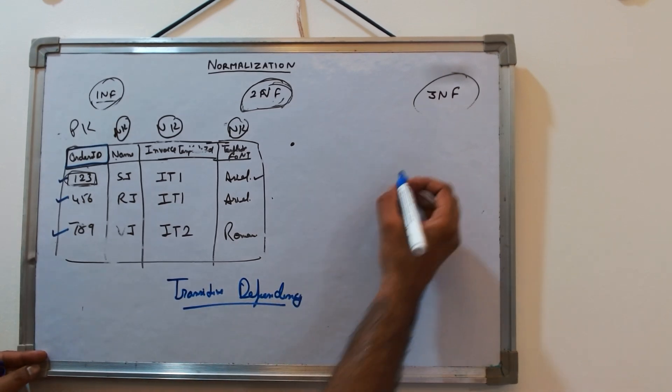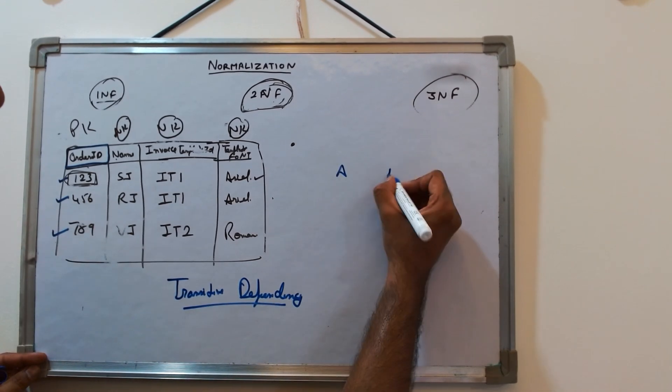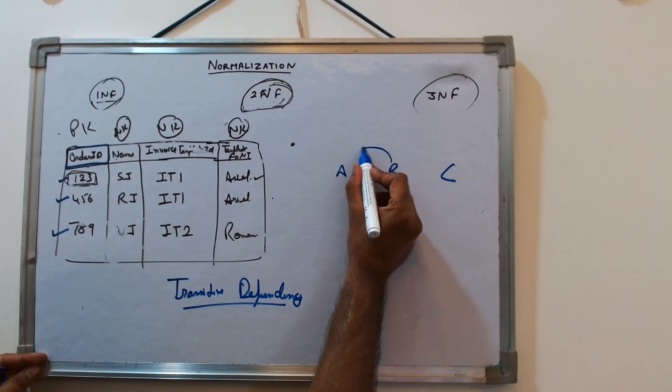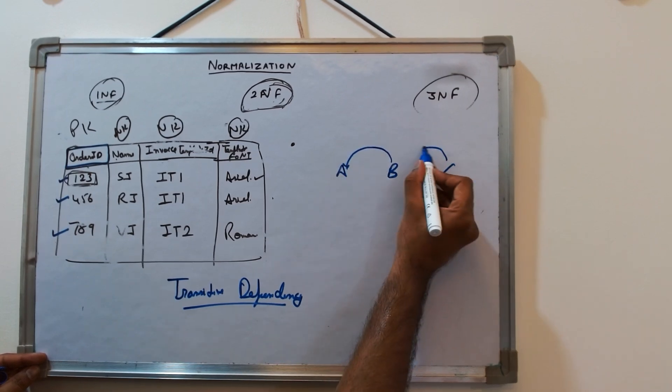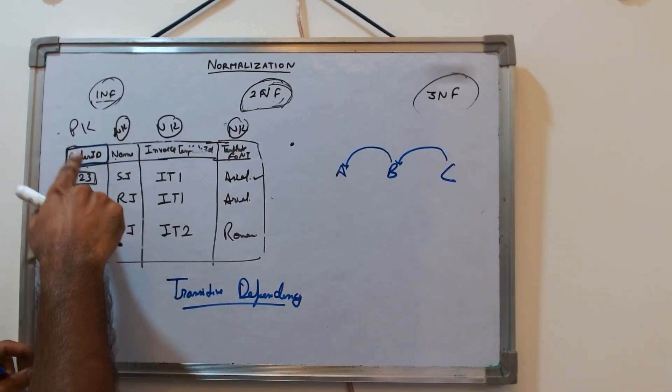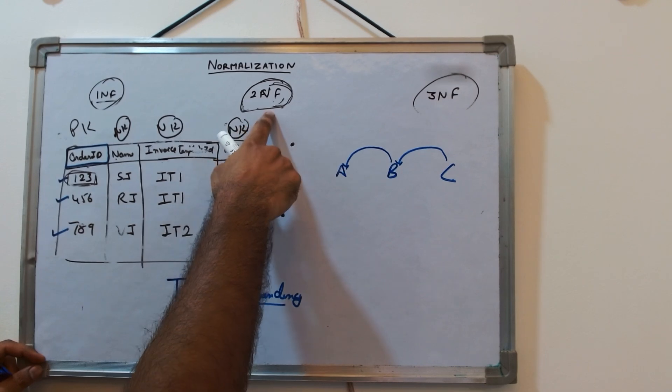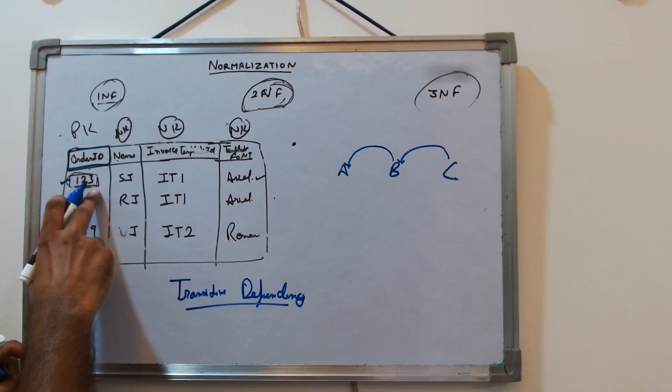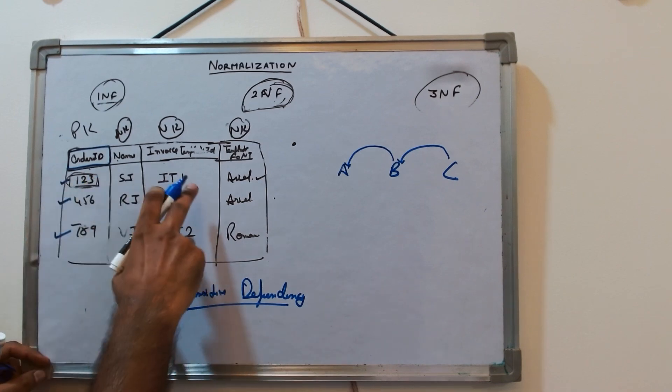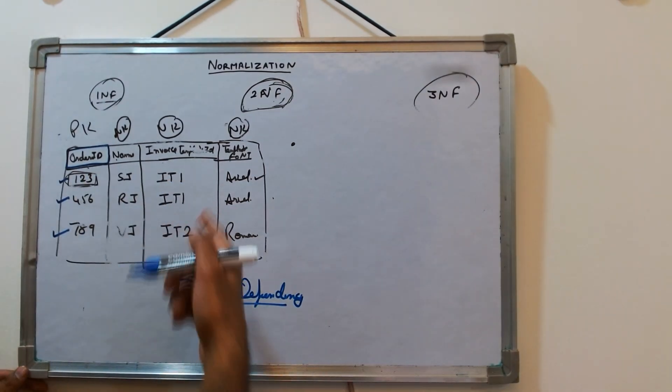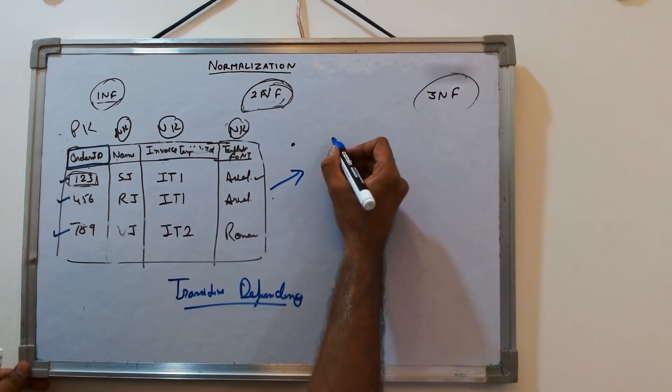Transitive dependency means, if you see that A, B, C—B is dependent on A and C is dependent on B. So here in this case, currently only one primary key, so it satisfies 2NF. But if you further look into this, the font is not actually dependent on order ID, it is actually dependent on invoice template ID. And we have to resolve this transitive dependency.